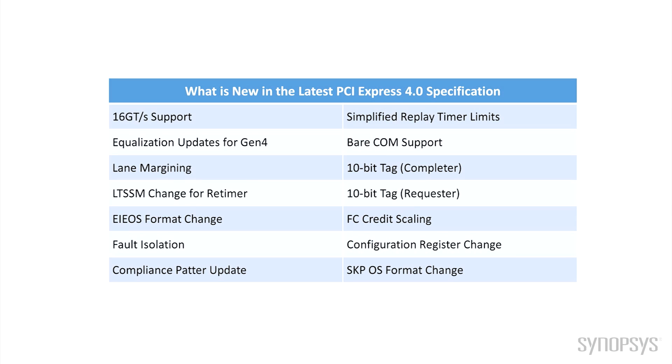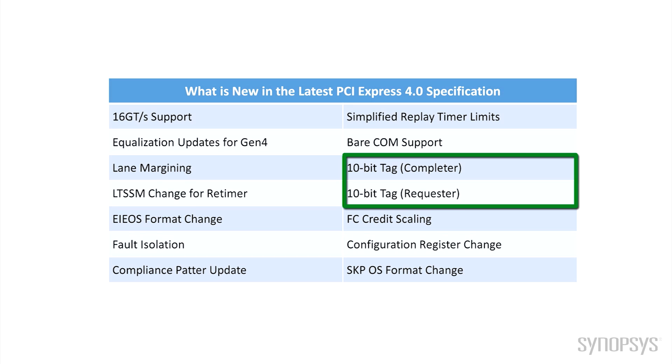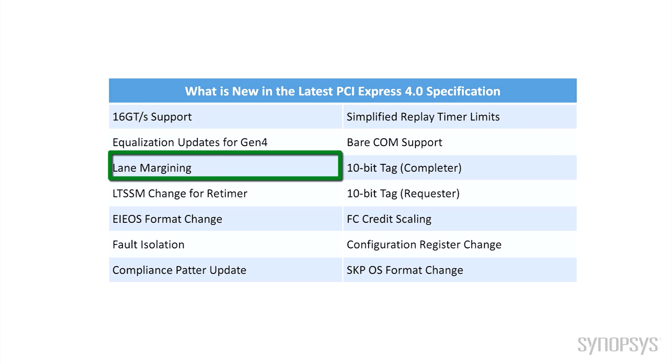The PCI Express 4.0 Draft 0.7 specification delivers many enhancements. In this video, we highlighted scaled credits and widened tags for improved link bandwidth, and lane margining at the receiver for system designers to assess the performance variation tolerance of their system. At Synopsys, we have a multitude of customers that are using our PCI Express 4.0 solutions to design SoCs for a range of applications from computers and workstations to automotive and cloud computing.